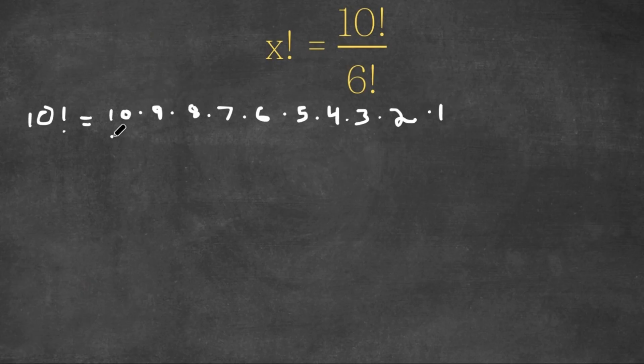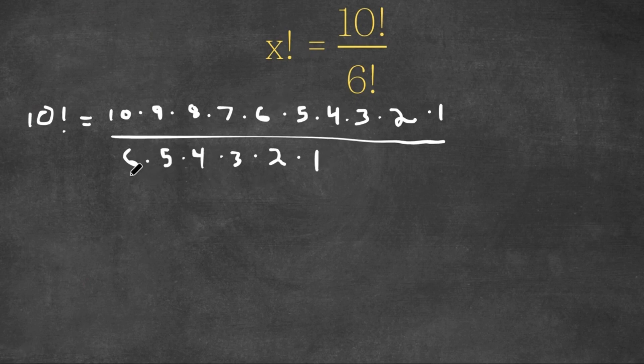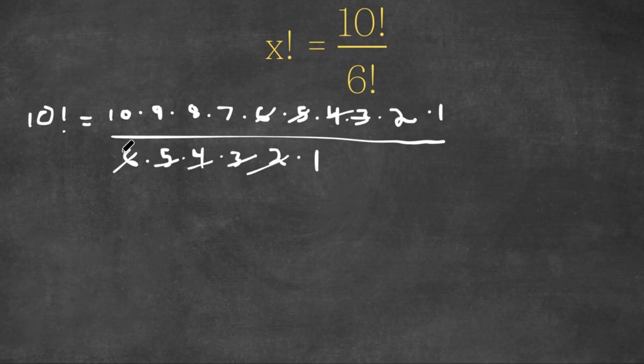Now we are dividing this by 6 factorial, which is equal to 6 times 5 times 4 times 3 times 2 times 1. Now if you notice, we have 6 on our numerator, so these two can cancel out, same thing with 5, same thing with 4, and same thing with all the terms below 6.